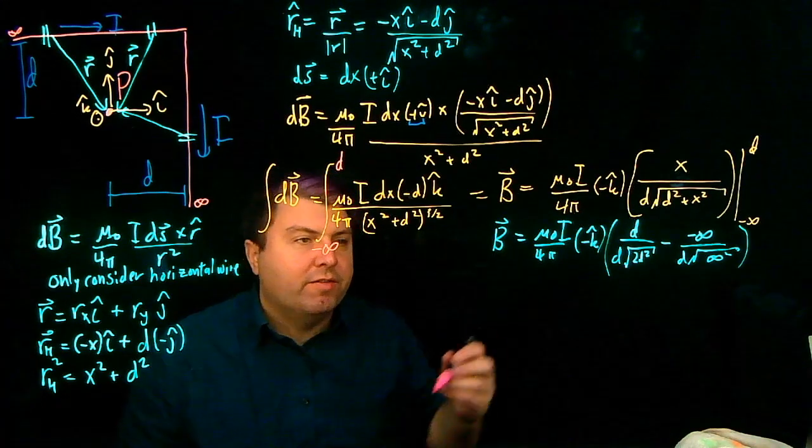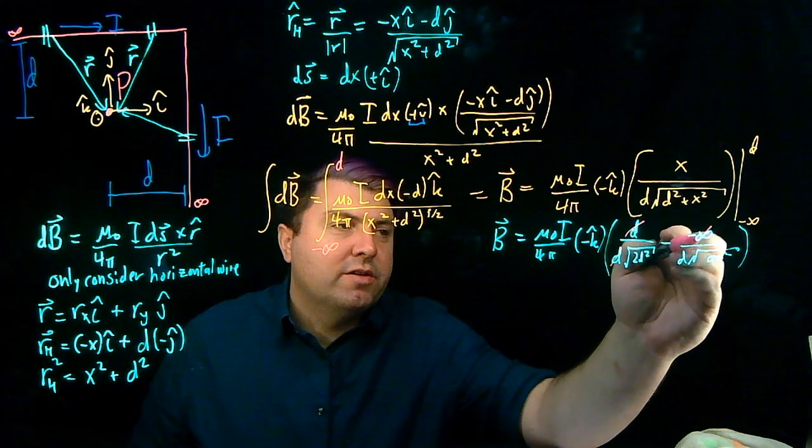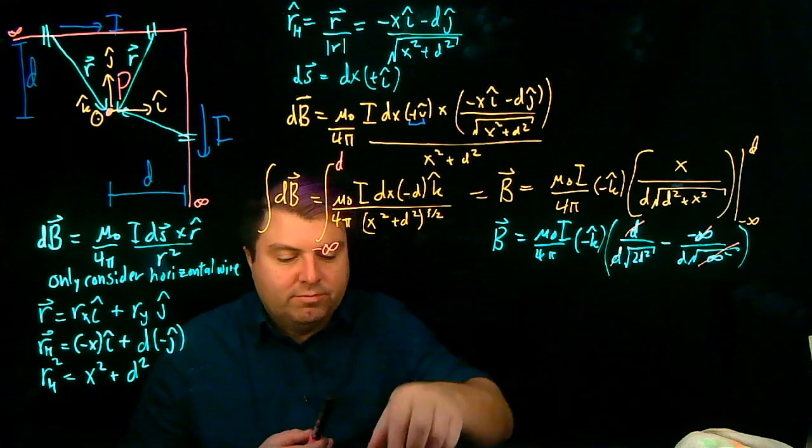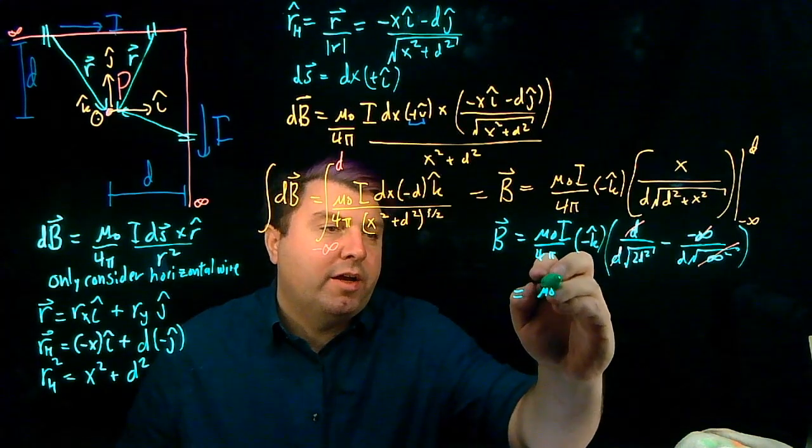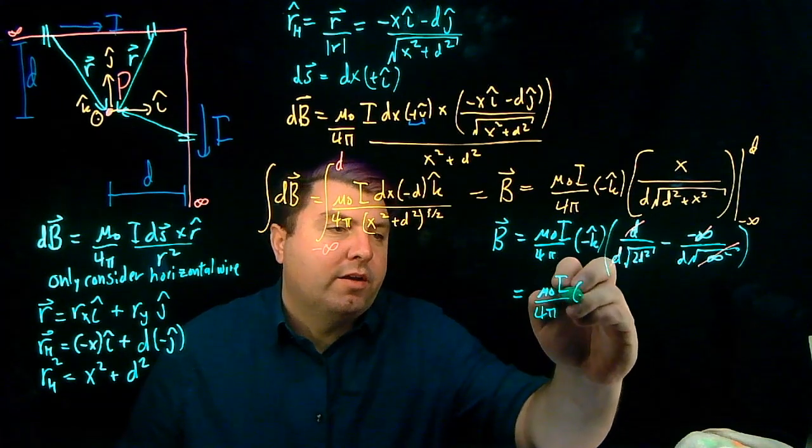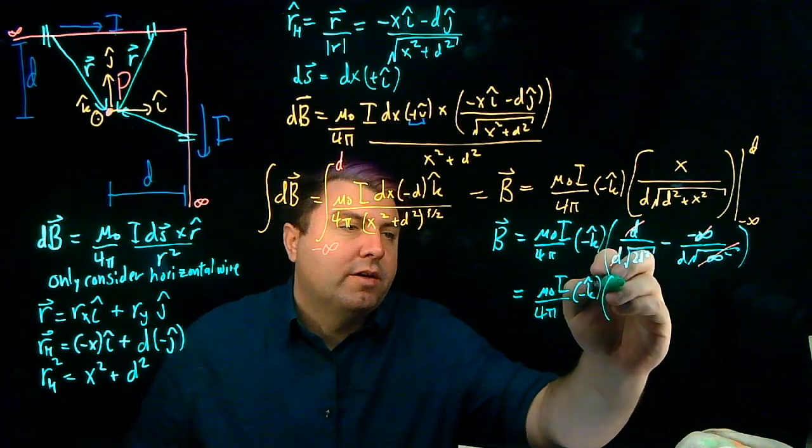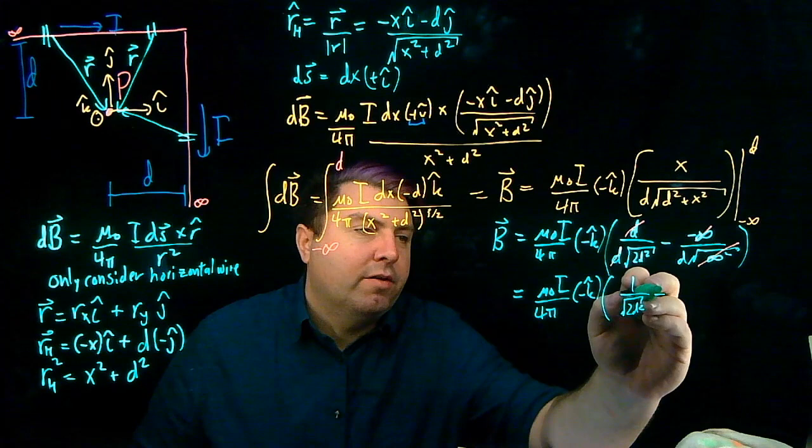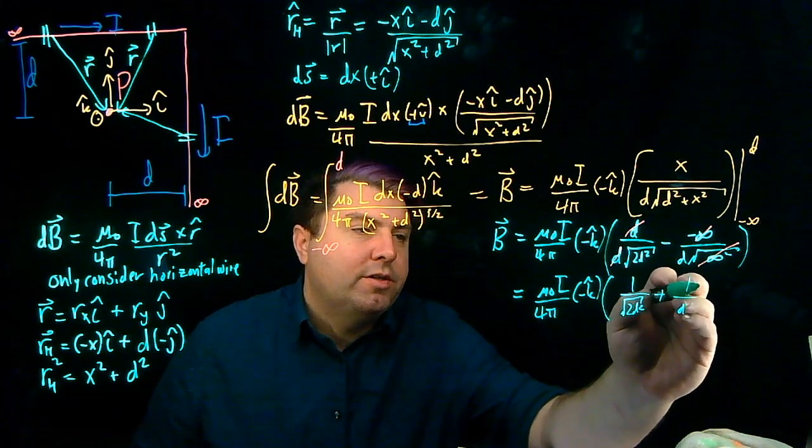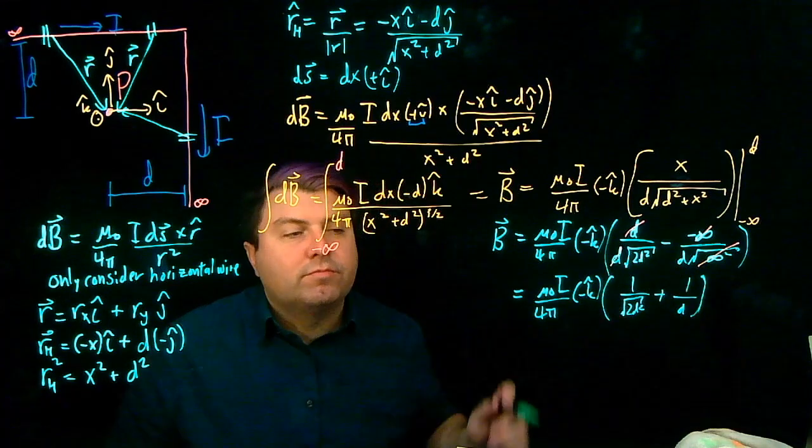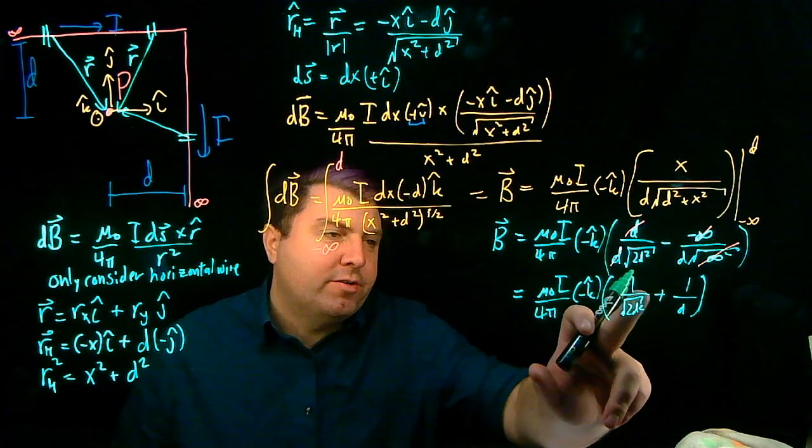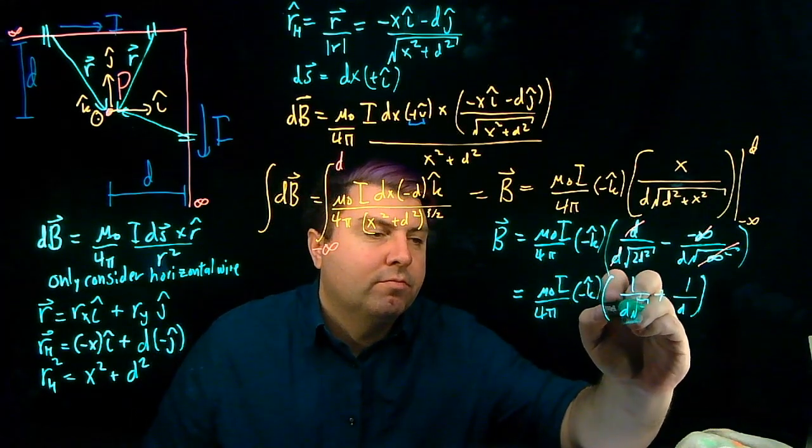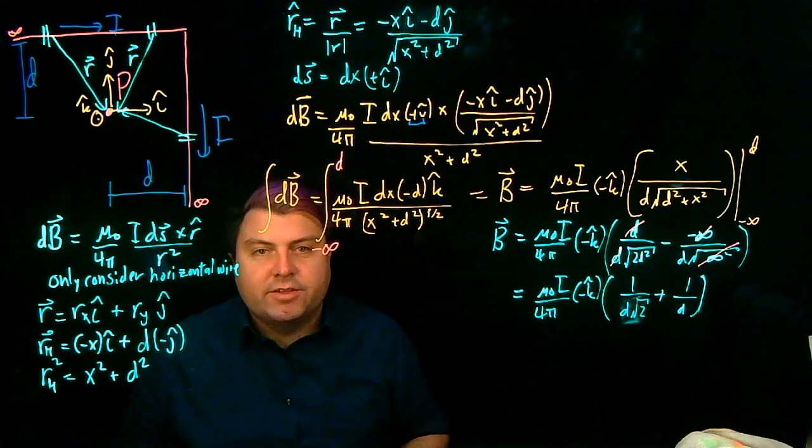So from this we get a good amount of cancellation. d and d will cancel. And I know we might feel squeamish about this, but infinity and the square root of infinity squared is going to cancel as well. So then we get mu naught i over 4 pi negative k hat. And so then I have 1 over square root of 2d squared minus negative 1, so I can call that plus 1, over d. I can recognize that my square root of 2d squared can be rewritten as d times square root of 2. And so then I can get an answer for that.